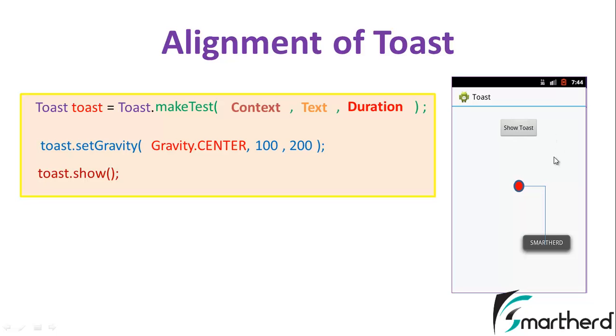Now suppose you want to print your Toast message at this area or this area or this area. For that we are having the x and the y coordinates like this. If you specify x and y coordinates both negative, then the Toast message will print in this area.